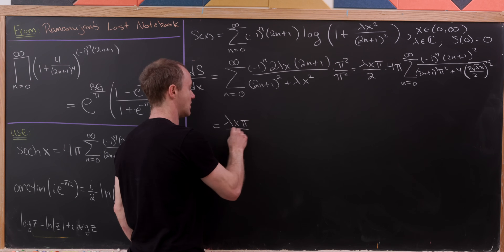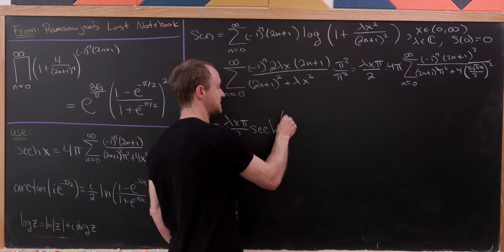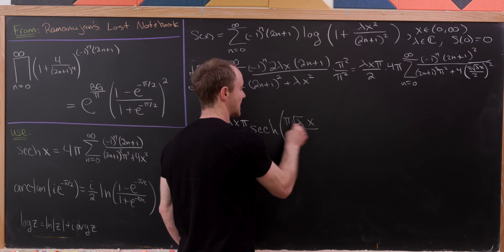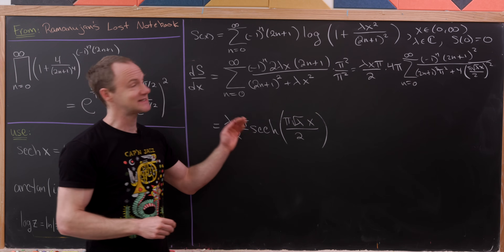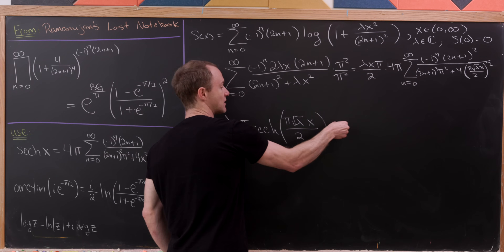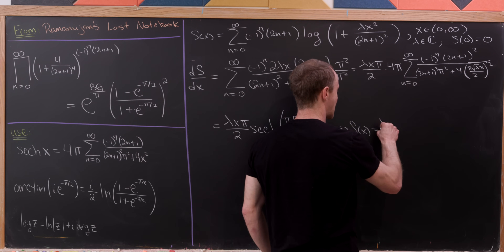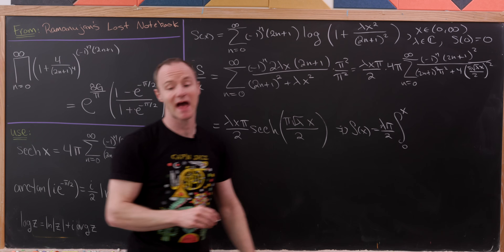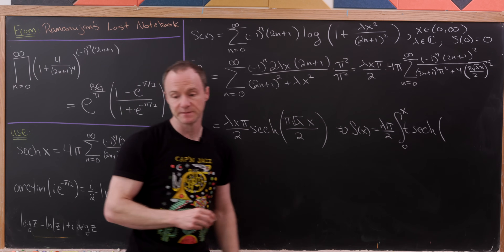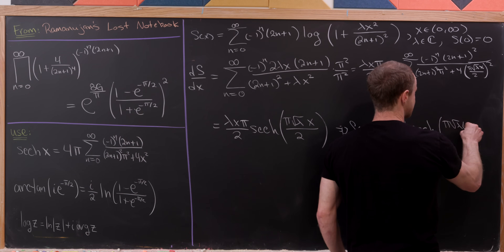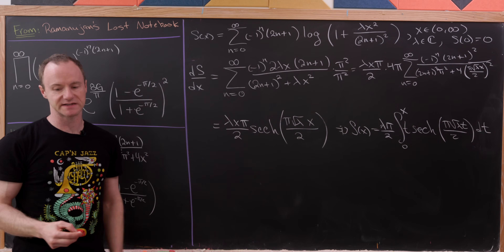Since s'(x) = [lambda*pi/2] * x * sech(pi*sqrt(lambda)*x / 2), and s(0) = 0, we can write s(x) as a formal antiderivative: s(x) = (lambda*pi/2) times the integral from 0 to x of t * sech(pi*sqrt(lambda)*t / 2) dt.